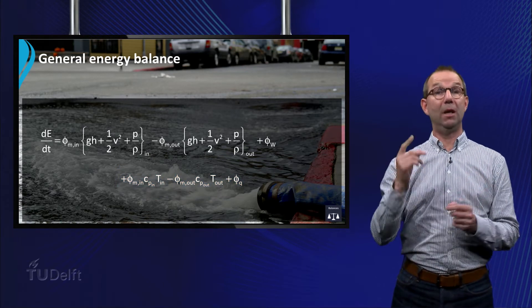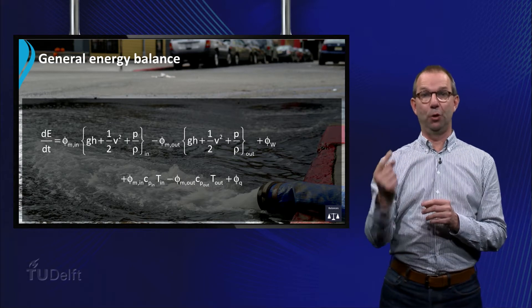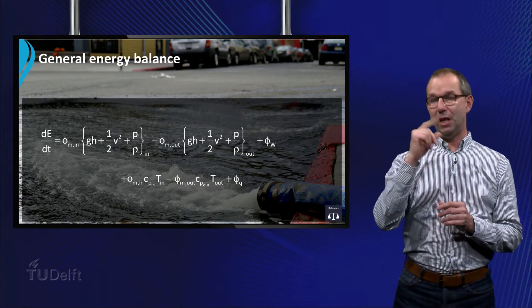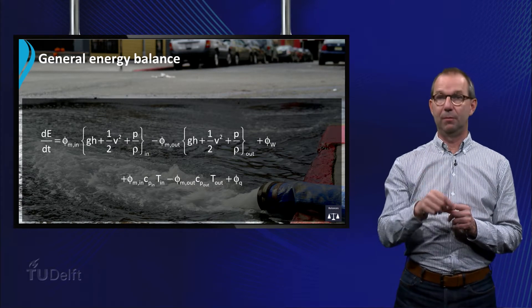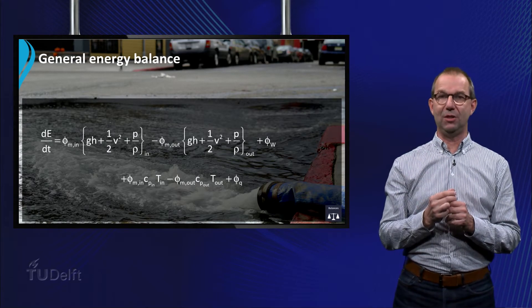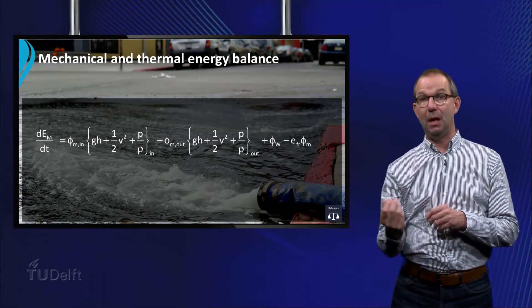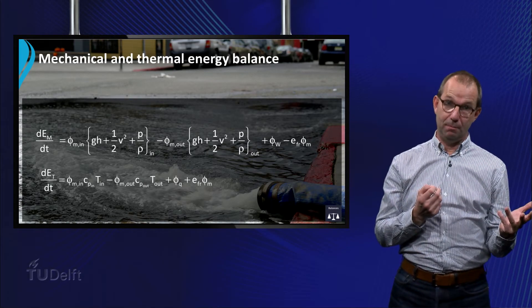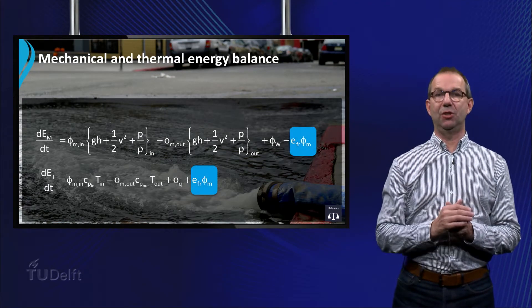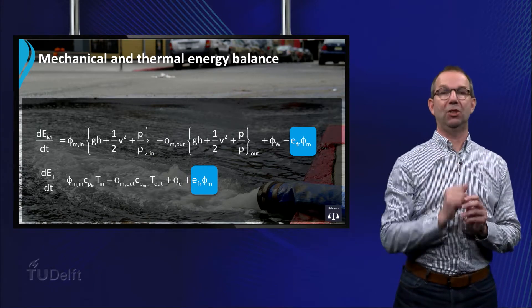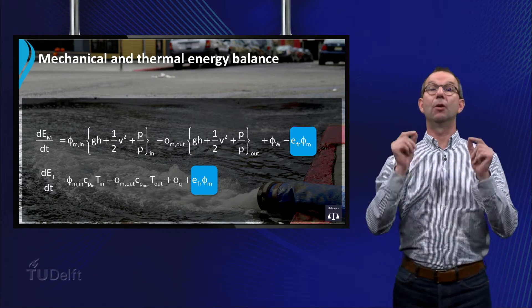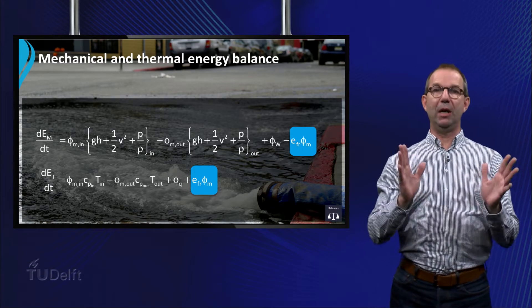However, in practice mechanical energy can be converted into thermal energy via friction. This represented by E_friction × φ_m becomes visible if we split the two balances in a mechanical energy balance and a thermal energy balance. The new term is called energy dissipation. It is always pointing in one direction. Mechanical energy is converted into heat. The mechanism is friction. It is never the other way around. Friction cannot turn heat into mechanical energy.